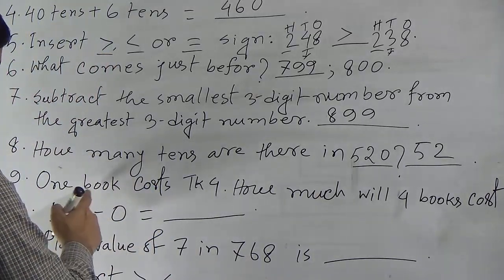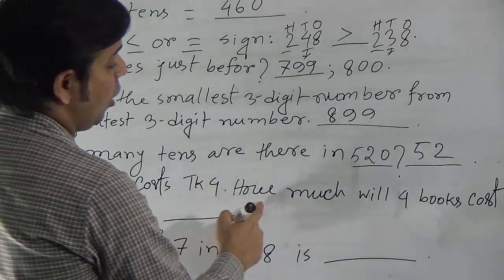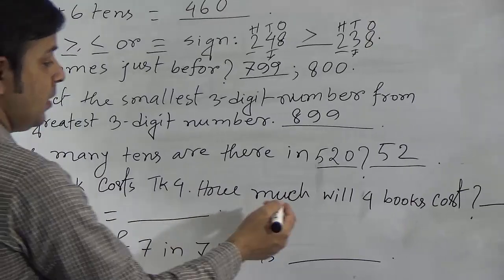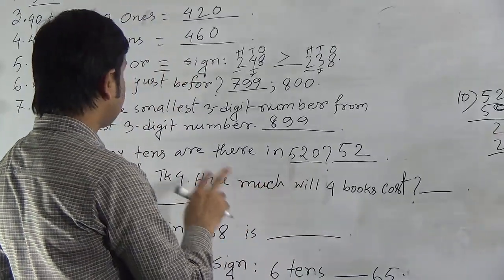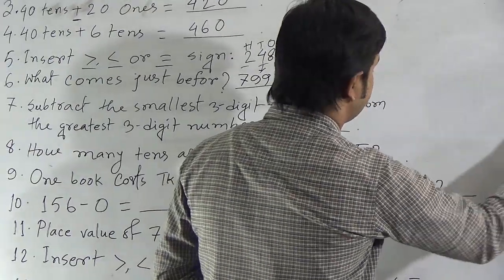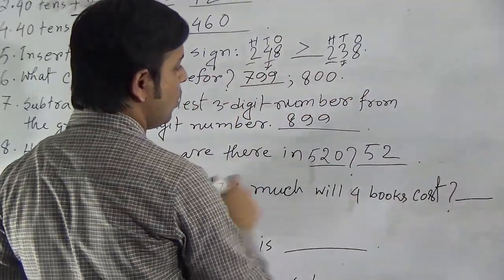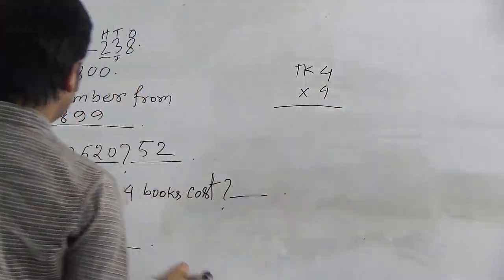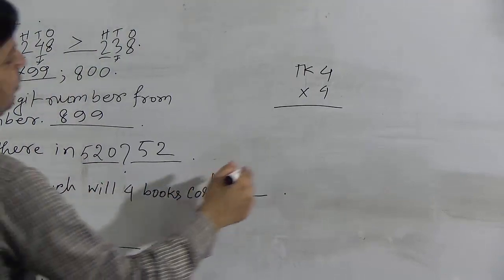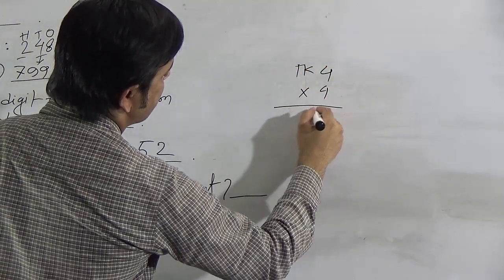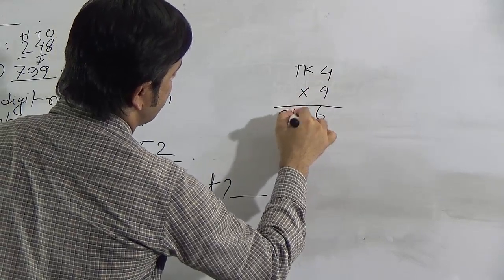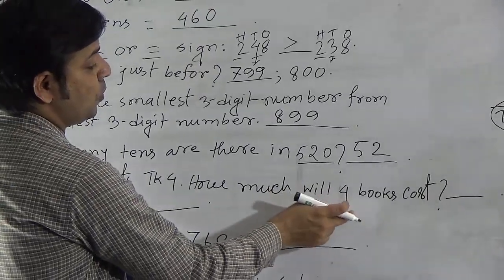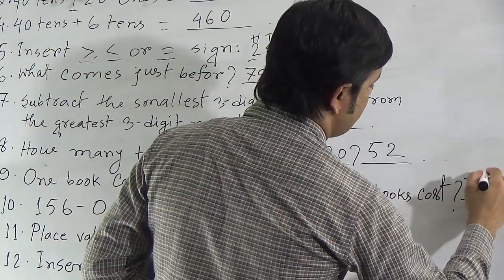Question 9: One book costs taka 4. How much will 4 books cost? The cost of 4 books is 4 times the cost of 1 book. We multiply 4 by 4, which gives 16. So the cost of 4 books is taka 16.